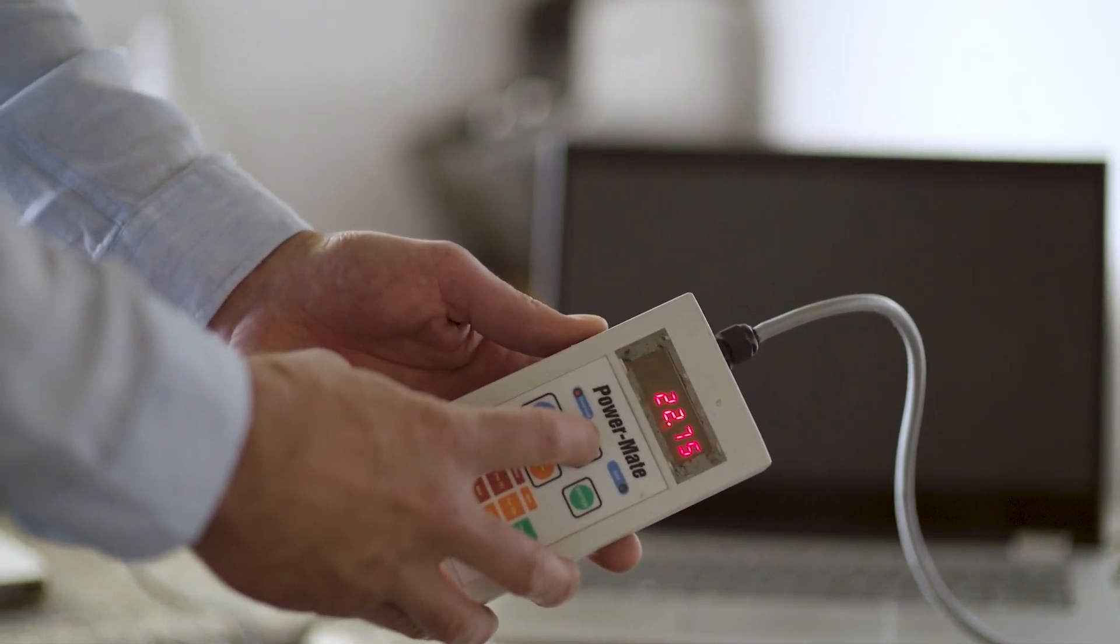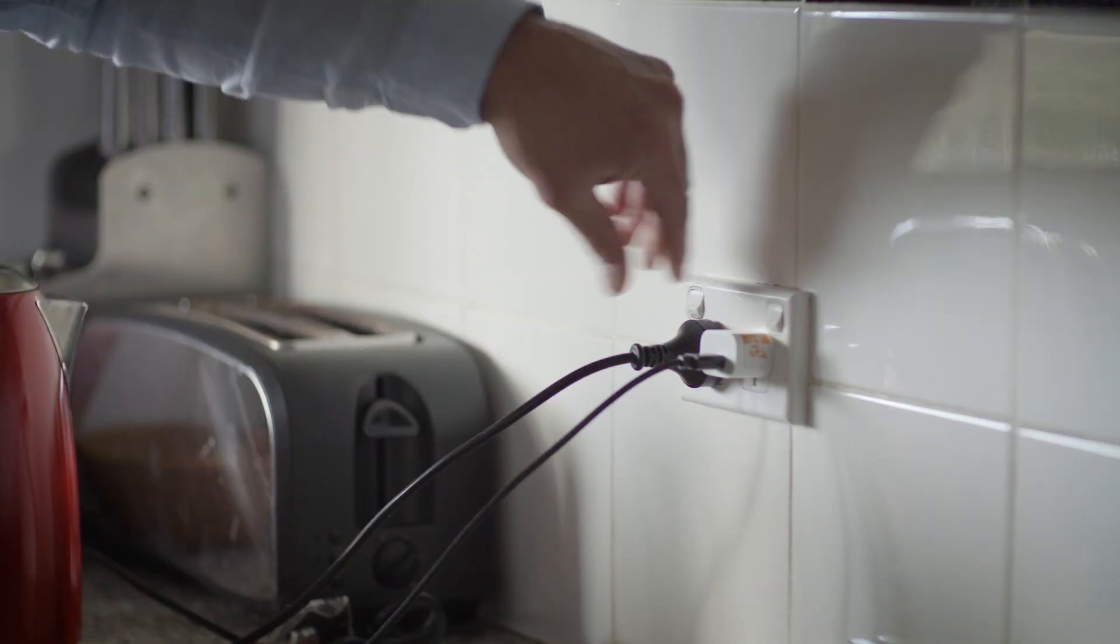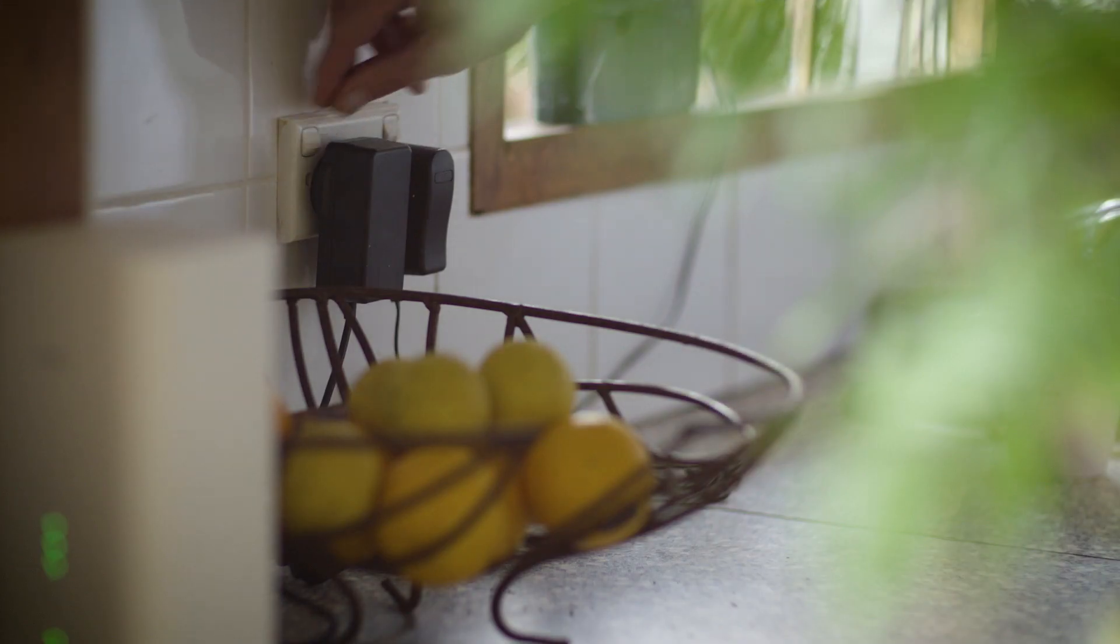This Powermate device shows us what those so-called OFF appliances are really using. So how do you save 10 to 15%? Turn them off.